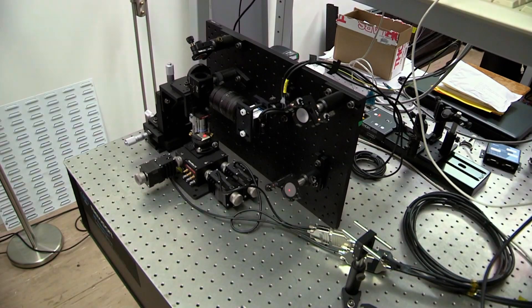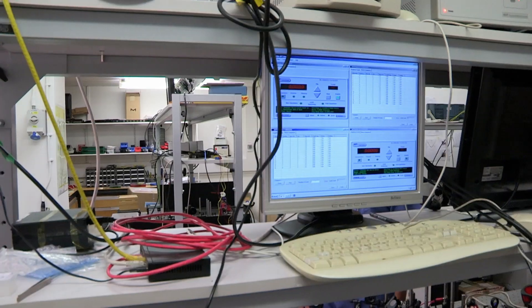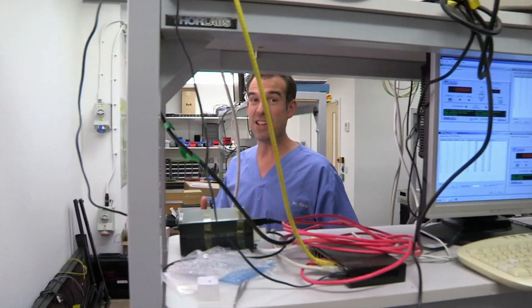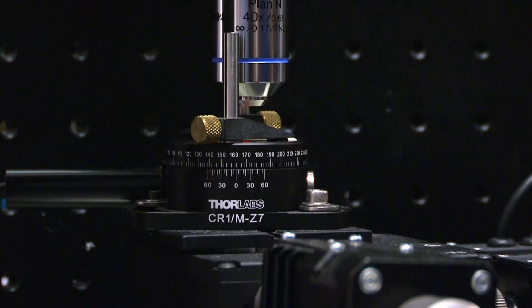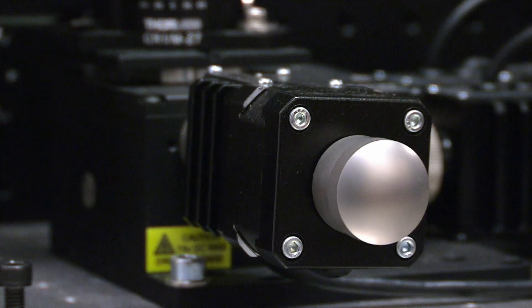This is a 3D nanoprinter. Nano means very, very, very small. This printer can print things that are a hundred thousand times smaller than the width of a human hair. And that is pretty small.